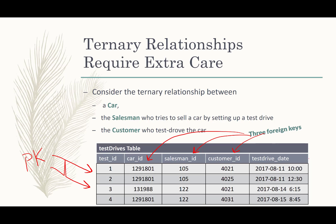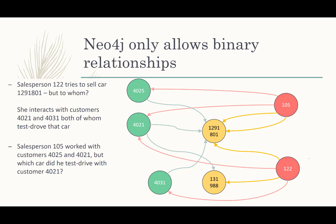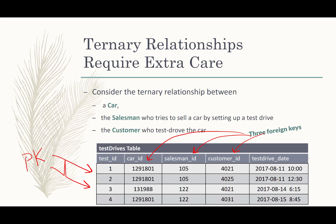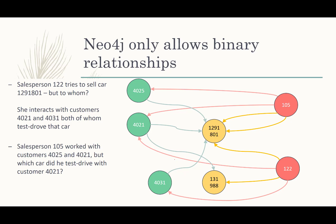That's fairly straightforward, but it doesn't work quite so well in Neo4j because Neo4j only allows binary relationships. If we look at this table of four rows of test drives modeled in Neo4j, we're going to take this ternary relationship and do the only thing we can do in Neo4j, which is decompose it into binary relationships. However, when you decompose into binary relationships, you have potential for data loss.